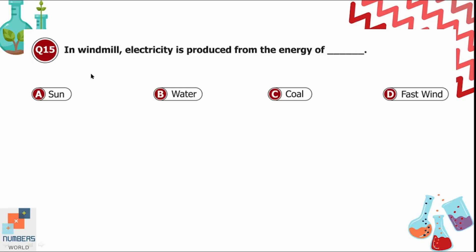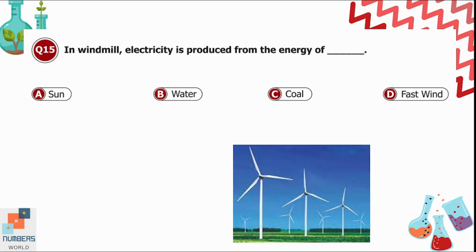Question 15: In a windmill, electricity is produced from the energy of what? Option A is sun. Option B is water. Option C is coal. Option D is fast wind. In a windmill, the energy of fast wind is used to produce electricity. Option D is correct.